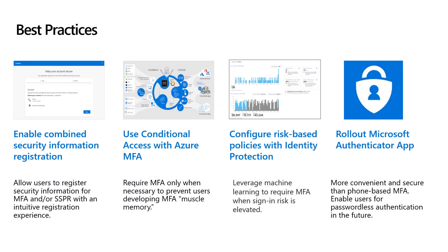To further reduce MFA prompts, you should do things like enabling single sign-on, Azure AD joining or registering devices, and giving users passwordless authentication options. Third, create risk-based policies with identity protection. Microsoft can analyze the signals from authentication attempts and use machine learning to determine how risky a sign-in is. You can then require these attempts to perform MFA as needed based on the risk level. This is a great way to put MFA in front of malicious attempts without prompting the legitimate users. Lastly, use the Microsoft Authenticator app over traditional text or phone-based MFA — it's the most secure and convenient MFA method, and it can be used for passwordless authentication if you enable it in your tenant.